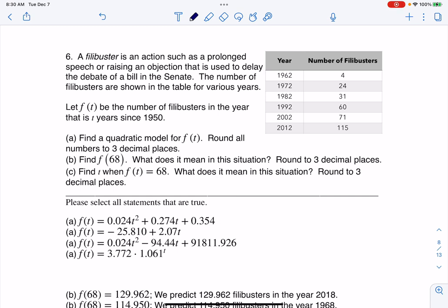Let F(T) be the number of filibusters in the year that is T years since 1950. So here's our base year. I'm going to highlight that so we can keep track of it. The first thing it asks is, can you find a quadratic model? So we'll go ahead and do that.